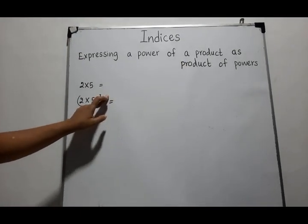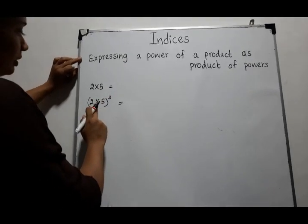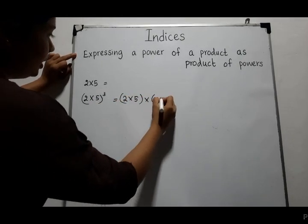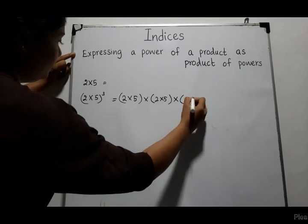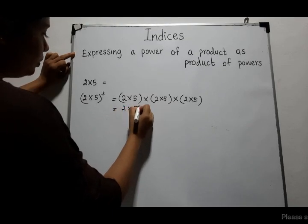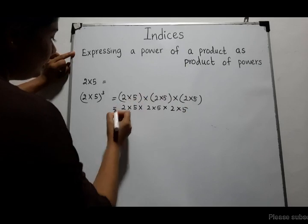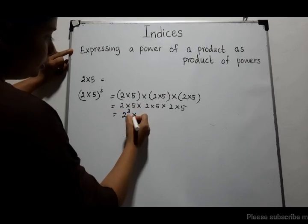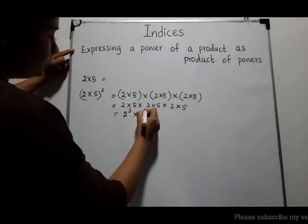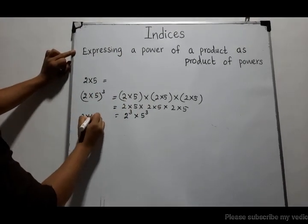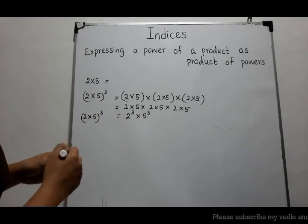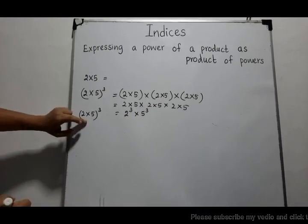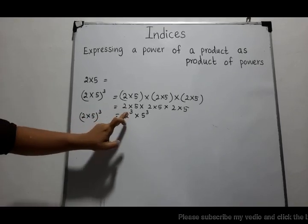Here, 2 into 5 to the power 3 means 2 into 5 is multiplied 3 times: (2×5)(2×5)(2×5). How many 2's are multiplied? Three. So we write 2 to the power 3. And 5 is also multiplied 3 times, so 5 to the power 3. Therefore, 2 into 5 to the power 3 can be written as the product of powers: 2³ into 5³. This left side is a power of a product, and the right side is a product of powers.